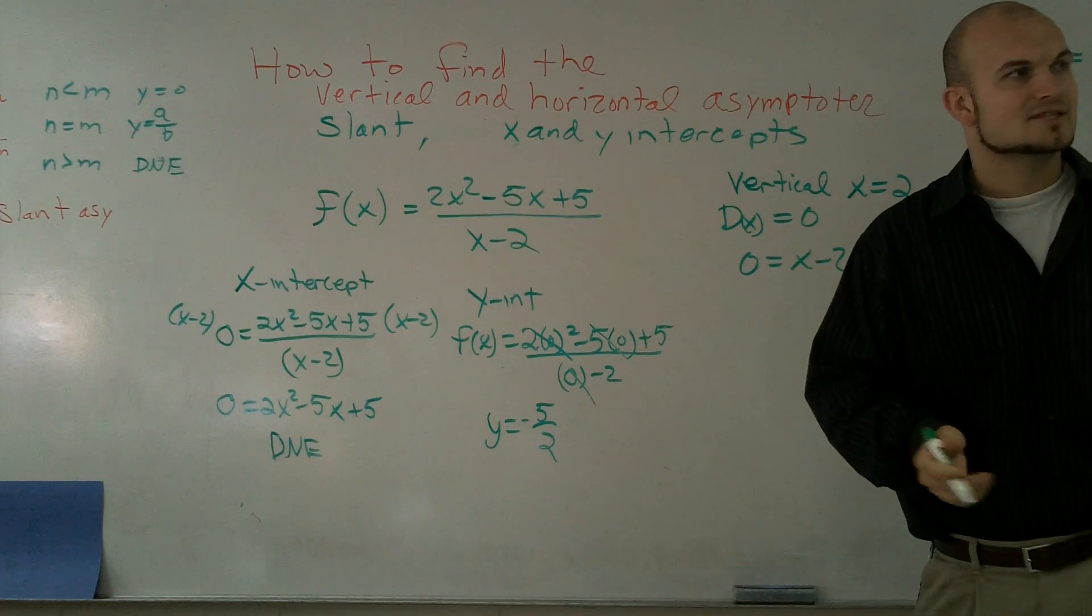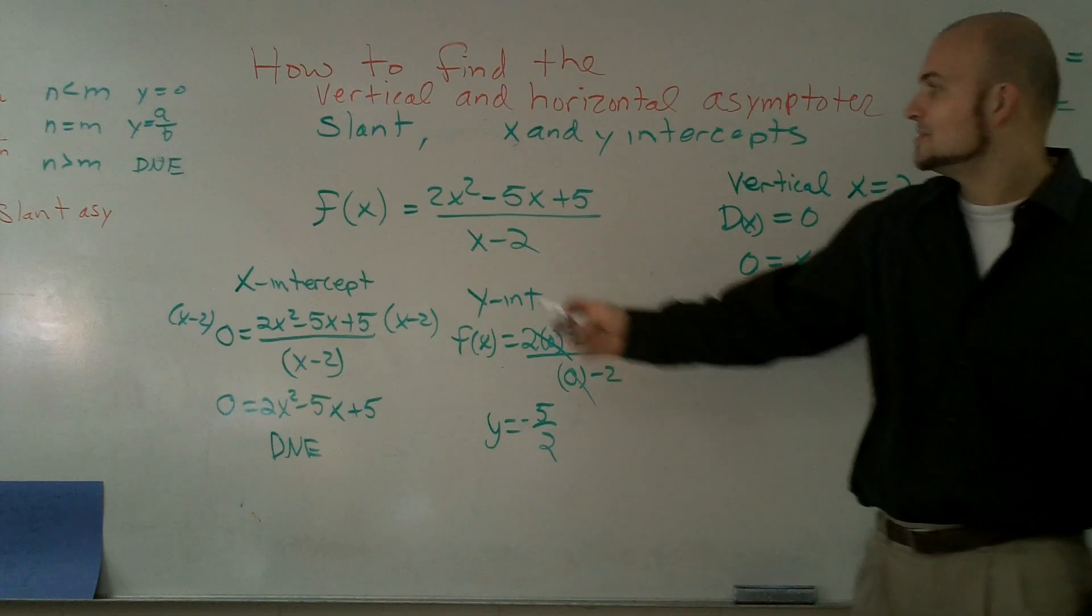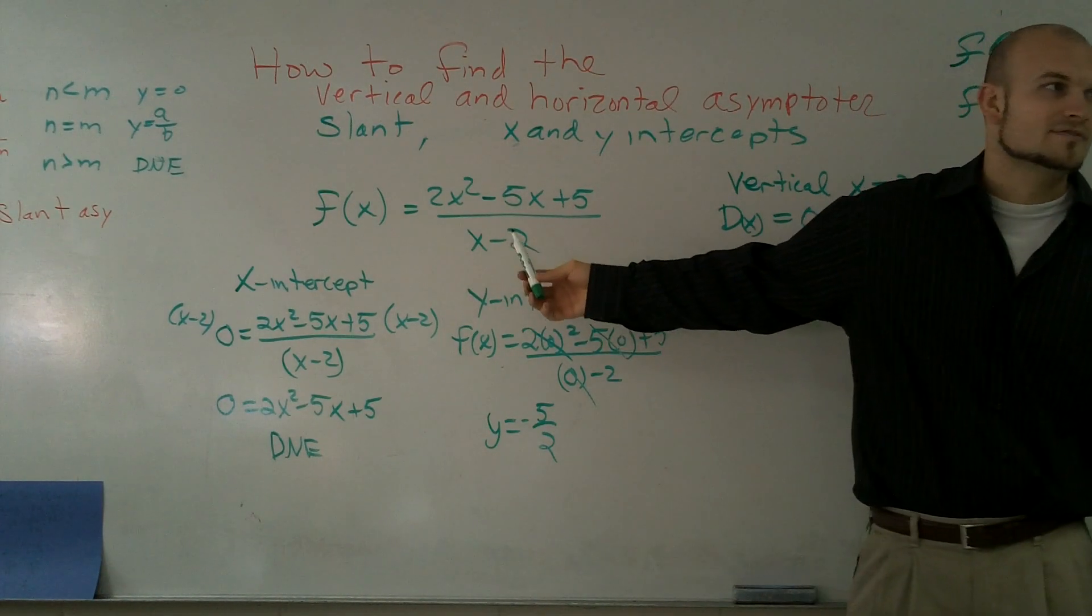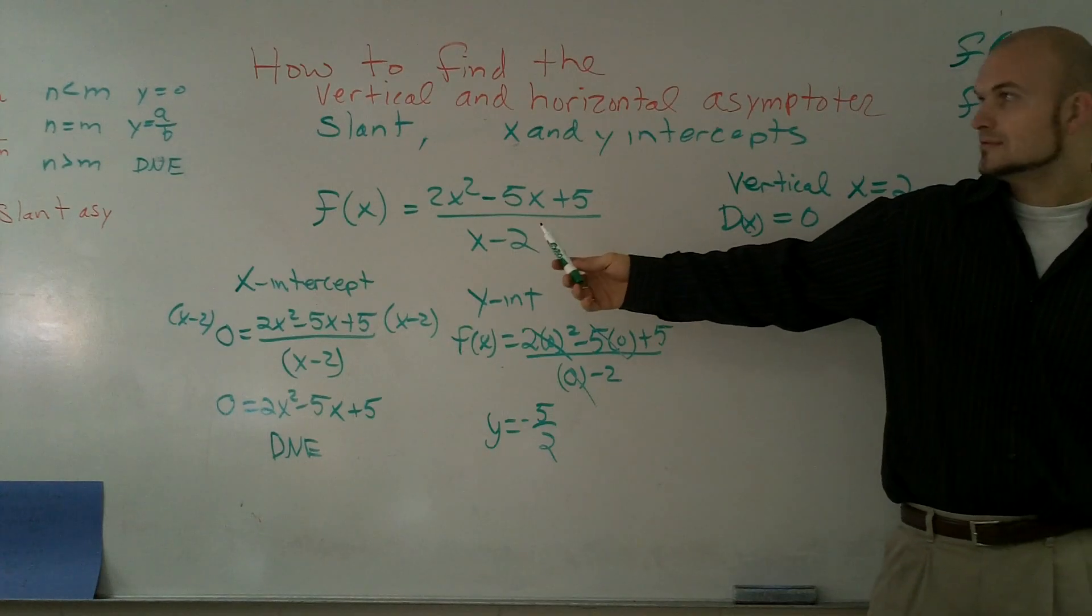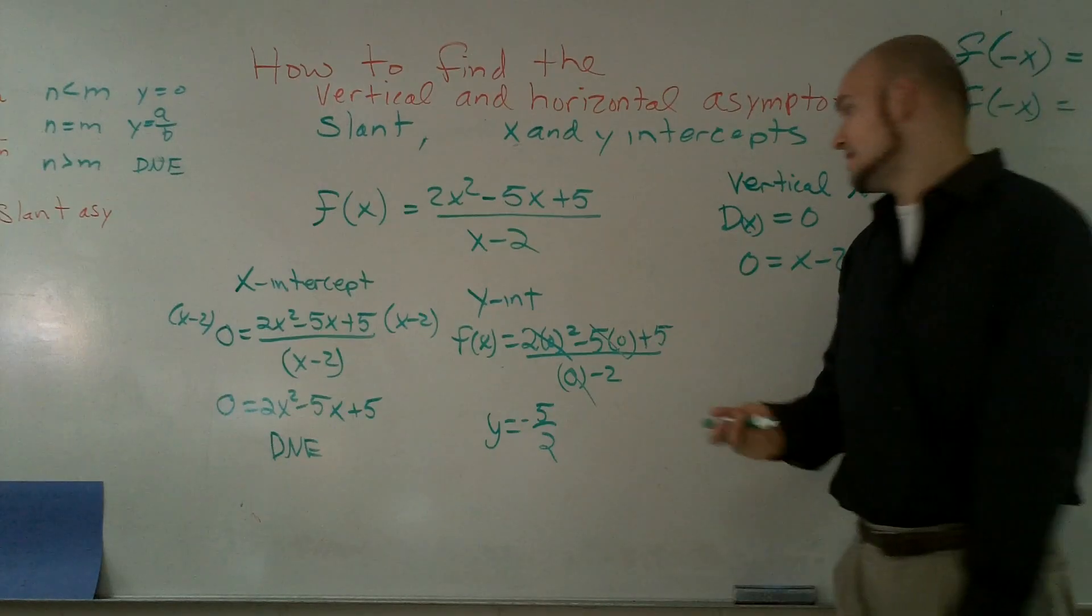The way that we find that out is by long division. However, I got even luckier because I actually have something that's in the form of x minus k. So therefore I can actually use synthetic division, which is going to make this even better.